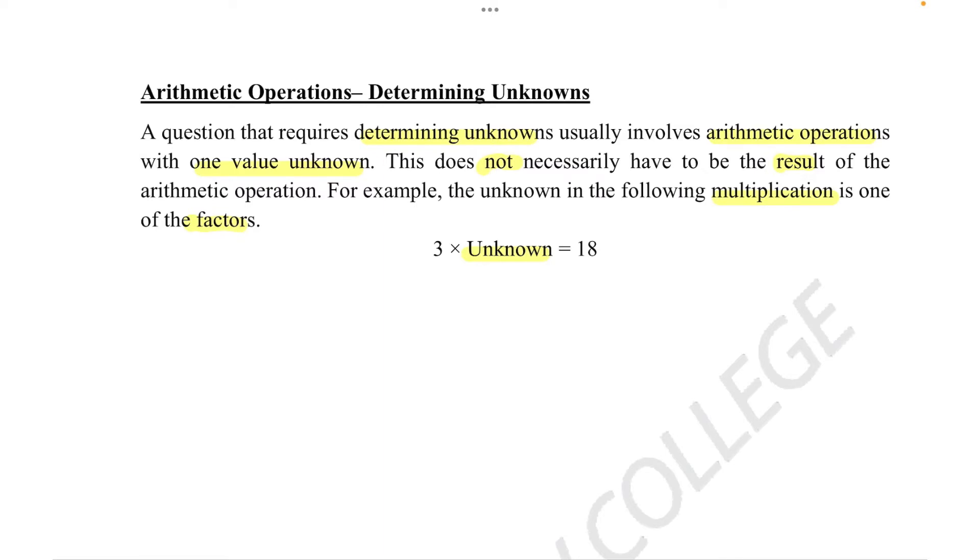These kinds of questions usually involve assigning a random word or letter to the missing value. In this case, they literally called it unknown. And then switching around the numbers so that you can isolate the unknown value on one side, whilst also keeping in mind that the equation has to be balanced. Balanced is a key word here.